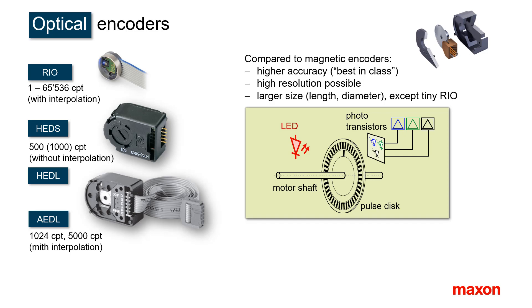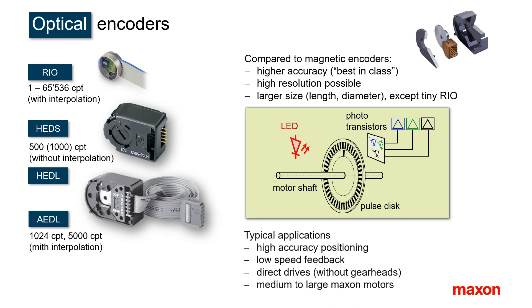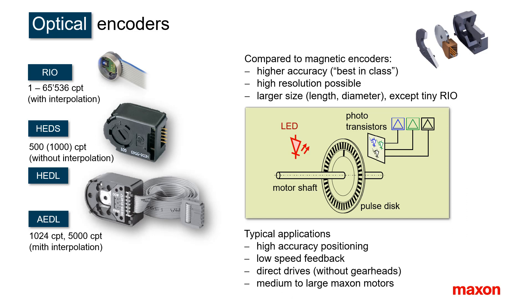Optical encoders are the best in class when it comes to accuracy and often also resolution. However, they are typically larger in size than many other Maxon encoders, which makes them not very suited for the smallest motors — the RIO being the exception that proves that rule. The high resolution combined with high accuracy makes them a perfect match for high-precision positioning and the feedback of very low speeds. Optical encoders of highest resolution are best in direct drive applications with powerful motors.